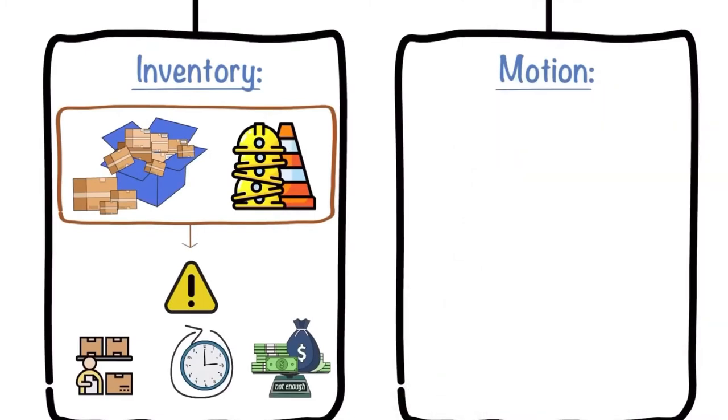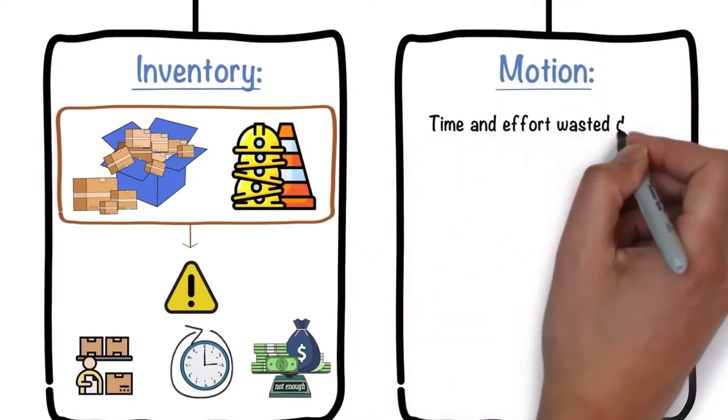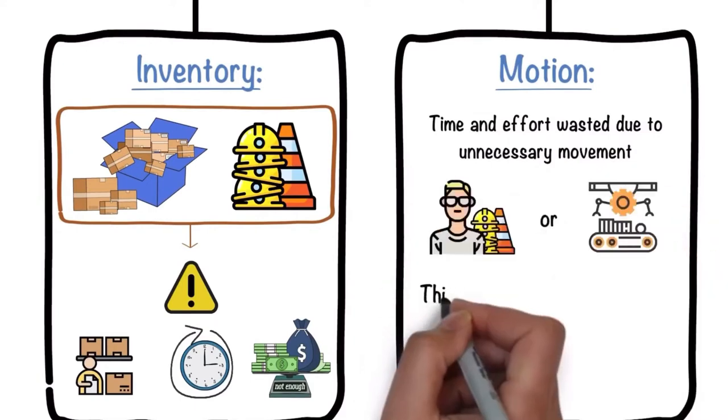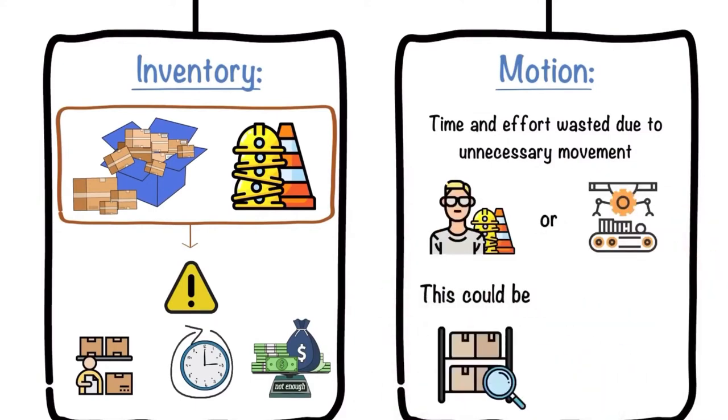Third, motion. This refers to the time and effort wasted due to unnecessary movement of people, equipment, or machinery. This could be sifting through inventory, double data entry, and so on.